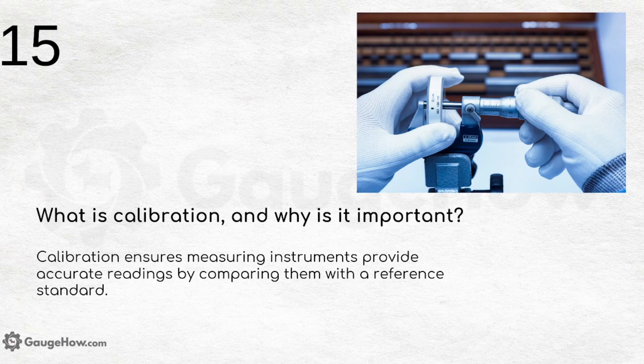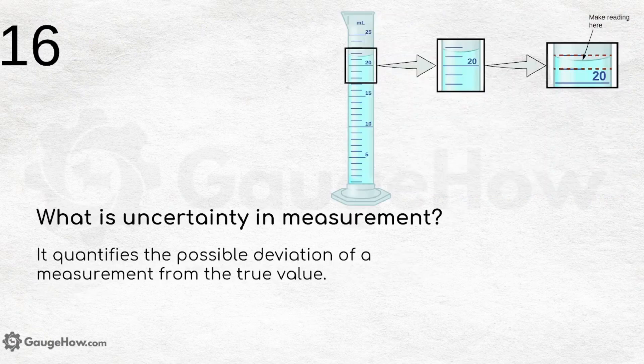What is calibration and why is it important? Calibration ensures measuring instruments provide accurate readings by comparing them with a reference standard. When undergoing practicals at university, you may have performed calibration to achieve precision before carrying out measurements — calibration always helps with precision.